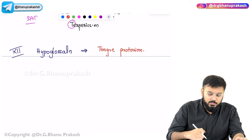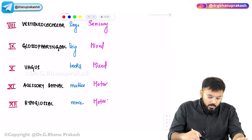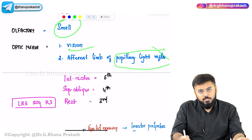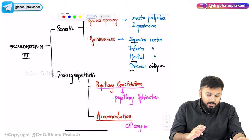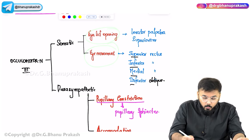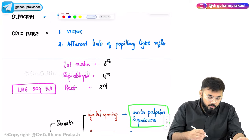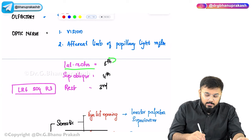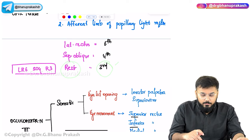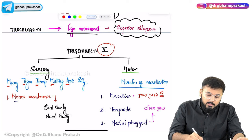Quick recap: CN I (olfactory) — smell only. CN II (optic) — vision and afferent pupillary light reflex. CN III (oculomotor) — somatic: eyelid opening (levator palpebrae superioris) and eye movement (superior rectus, inferior rectus, medial rectus, inferior oblique); parasympathetic: pupillary constriction and accommodation. CN IV (trochlear) — eye movement via superior oblique. LR6 SO4 R3 mnemonic applies.